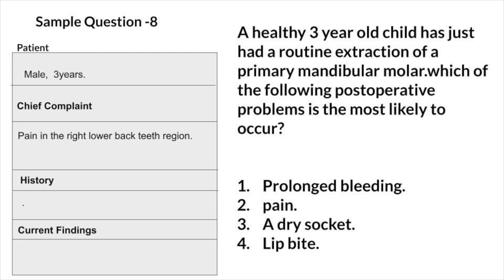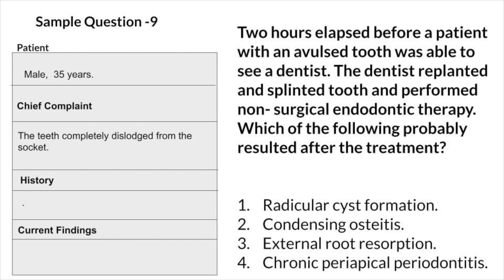A healthy three-year-old child has a routine extraction of a primary mandibular molar. Which of the following post-operative problems is most likely to occur? Prolonged bleeding, pain, dry socket, or lip bite? Answer: lip bite. After an inferior alveolar nerve block injection, post-anesthetic biting of anesthetized tissue — tongue, lip, or inner cheek — frequently occurs in young children, as it is difficult for them to understand that they can hurt themselves by biting anesthetized tissue.